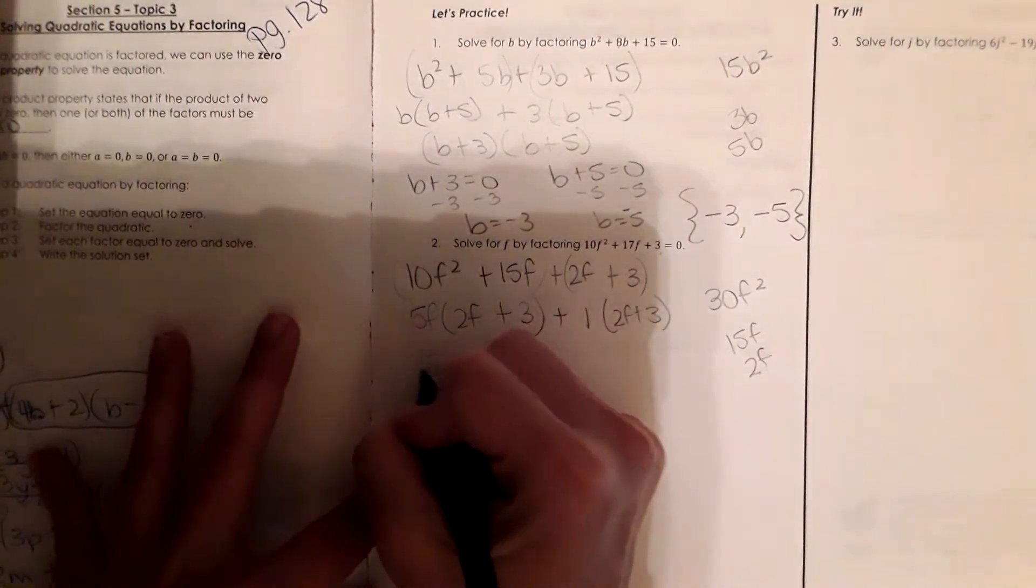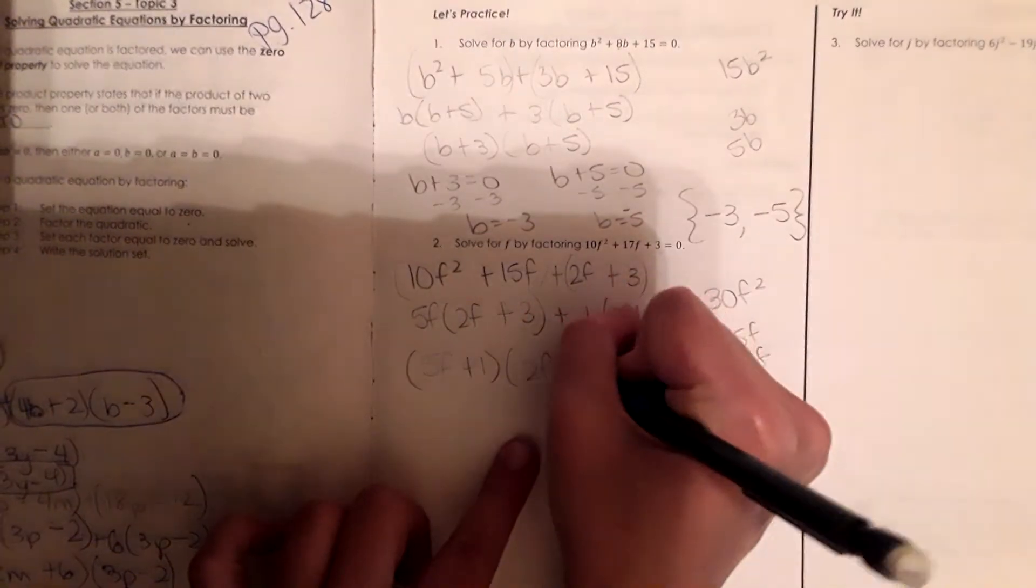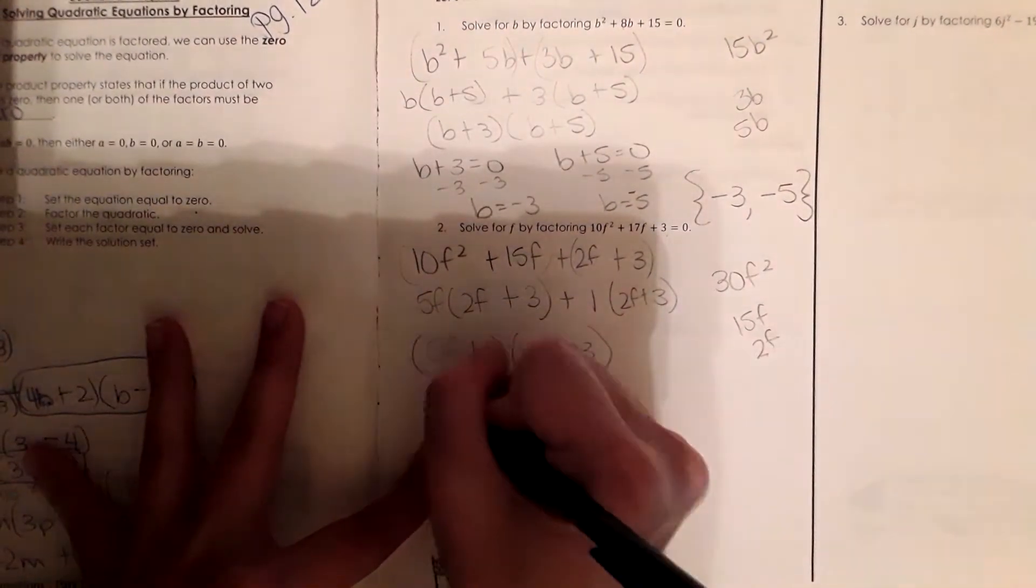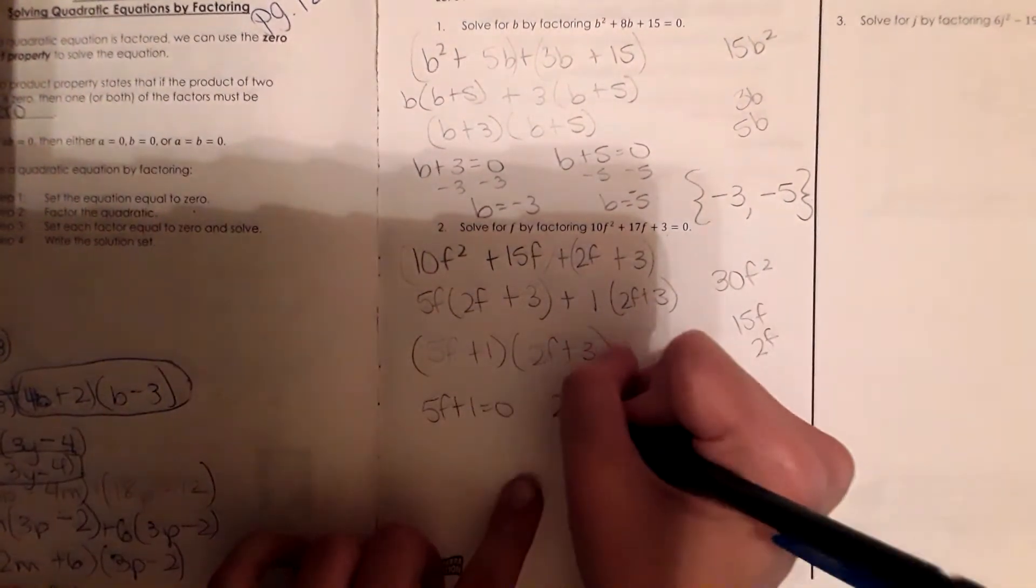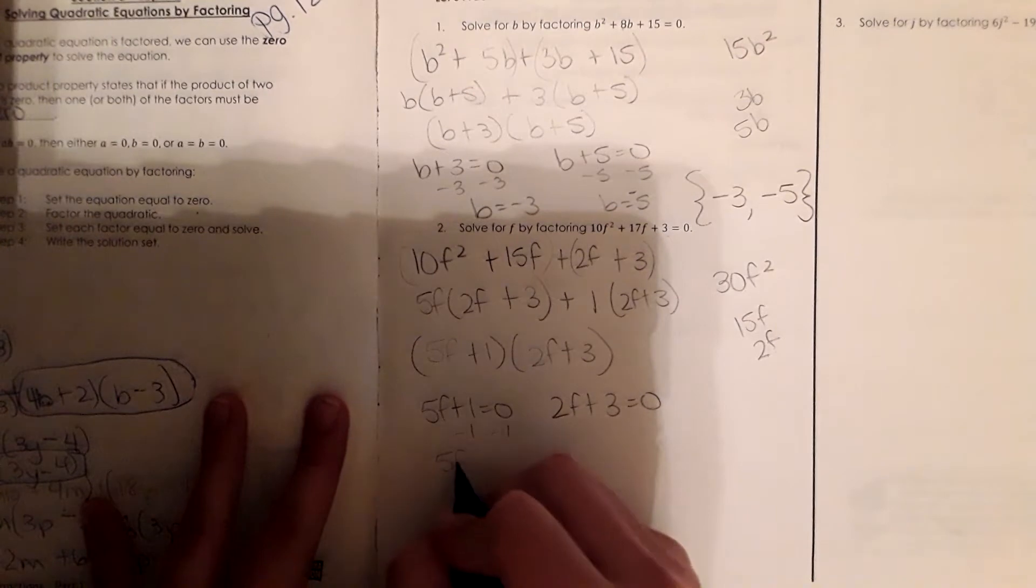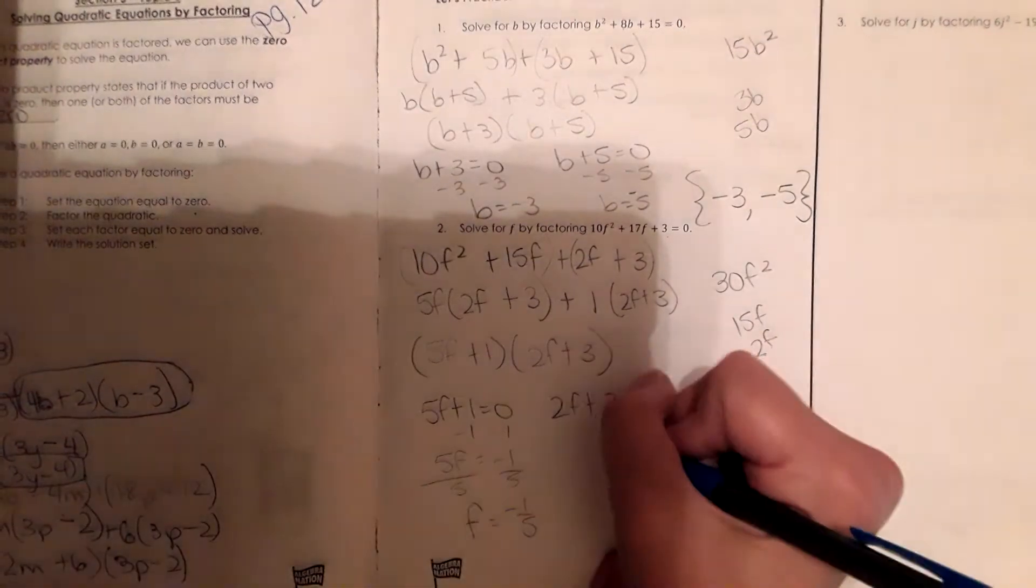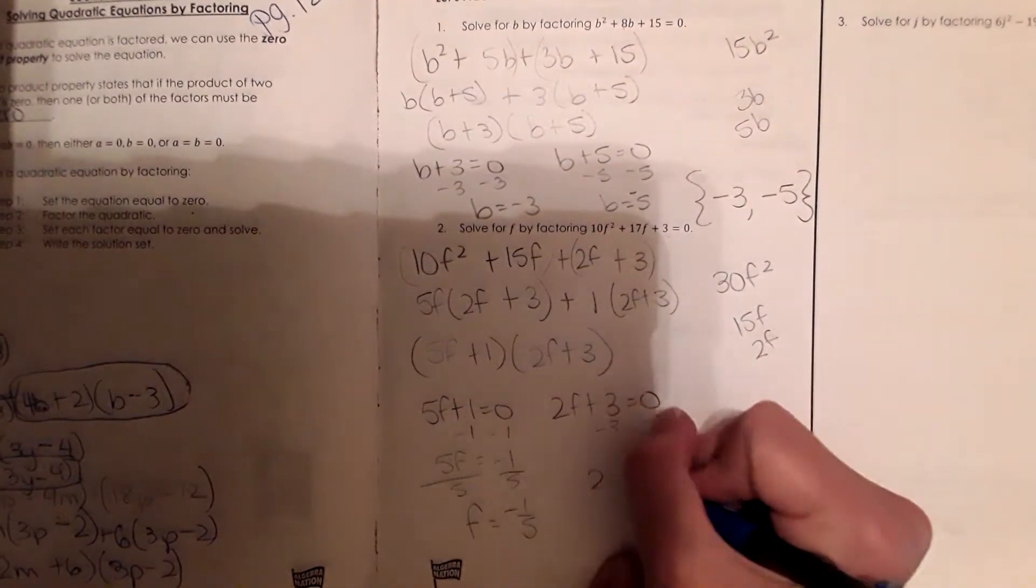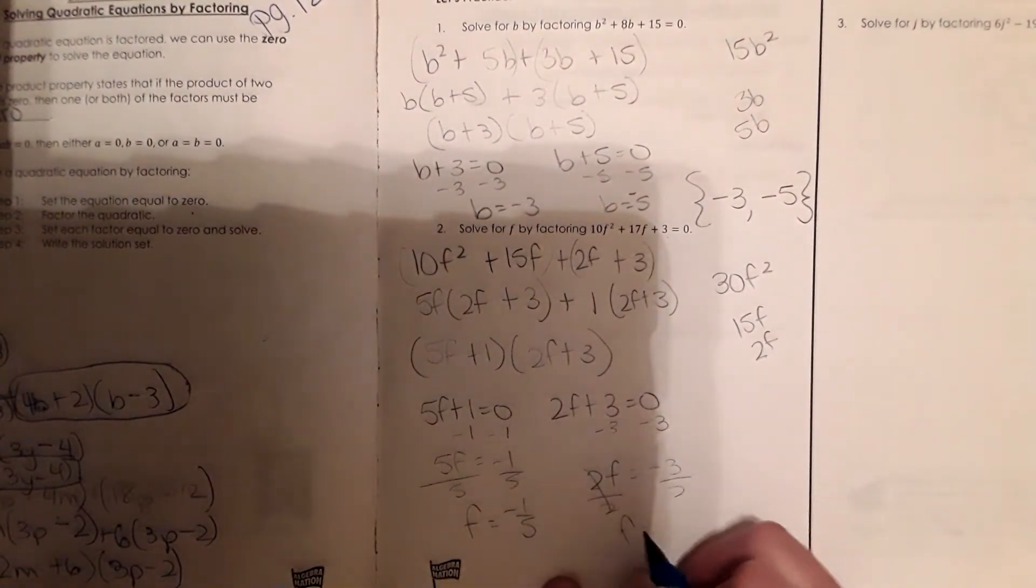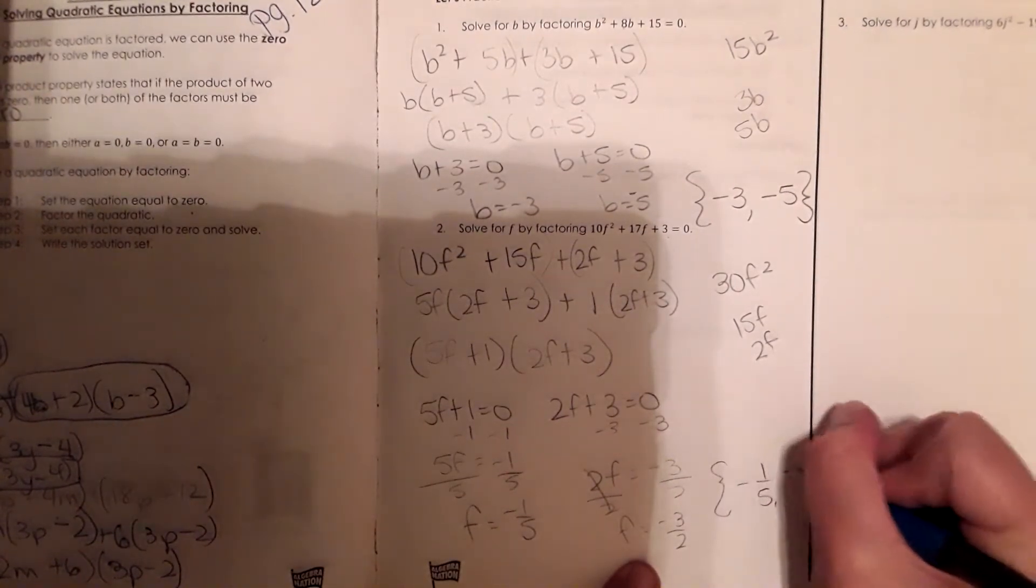So our two factors is 5f plus 1 and 2f plus 3. Now the next step is to set each of these equal to zero. So we get 5f plus 1 equals zero and 2f plus 3 equals zero. Subtract 1. So I get f equals negative 1 fifth. And here 2f equals negative 3 divided by 2. And f equals negative 3 halves. So the two numbers in the brackets would be negative 1 fifth and negative 3 halves.